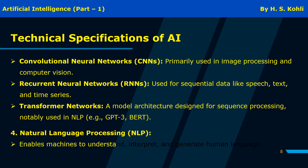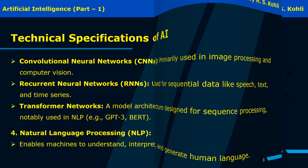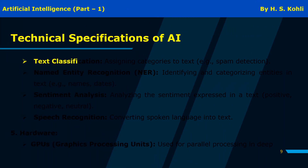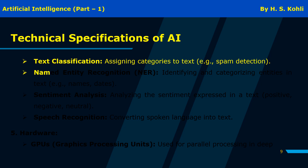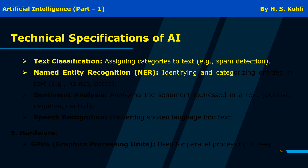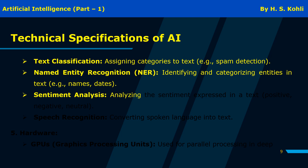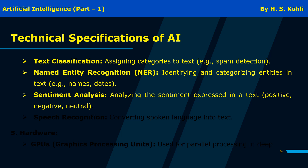Natural language processing (NLP) enables machines to understand, interpret, and generate human language. Key NLP tasks include: text classification — assigning categories to text, such as spam detection; named entity recognition (NER) — identifying and categorizing entities in text like names and dates; sentiment analysis — analyzing the sentiment expressed in a text as positive, negative, or neutral; and speech recognition — converting spoken language into text.